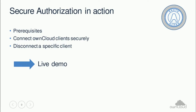We are now approaching the live demo. There are some prerequisites to use OAuth in OnCloud. First of all, you need an OnCloud 10 server with the OAuth app installed and enabled — you can get the app from the OnCloud marketplace. You also need to use clients with OAuth support. In our example, we will use the OnCloud desktop client 2.4.0, which is about to be released. Of course, OAuth will also be usable with the Android and iOS clients.